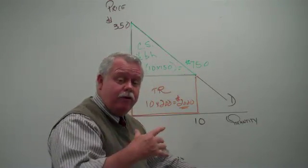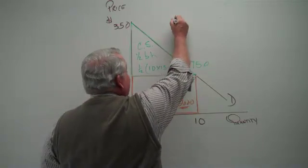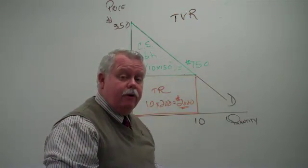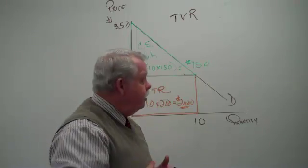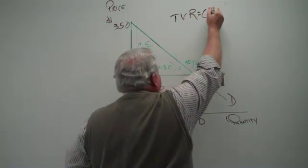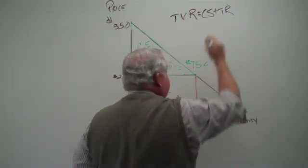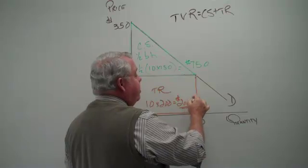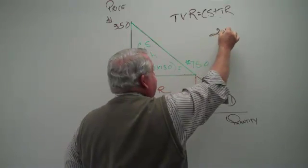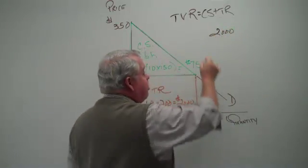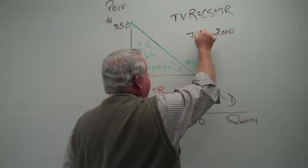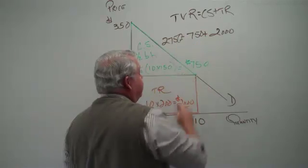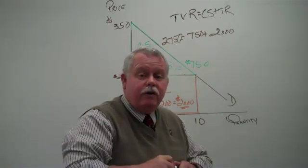Now, I add one other term to this. I call it the total value received by the customers. The total value they received is consumer surplus plus total revenue. That's the total amount of money they were willing to spend. They were willing to spend not just the $2,000 that they did spend, but they were willing to spend another $750. So the total value received in this instance is $2,750.